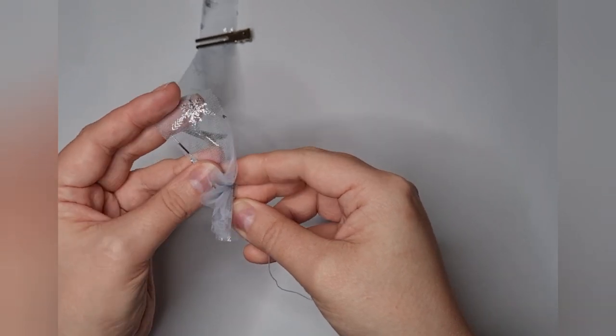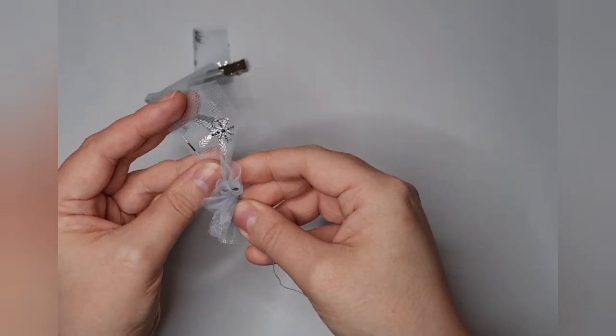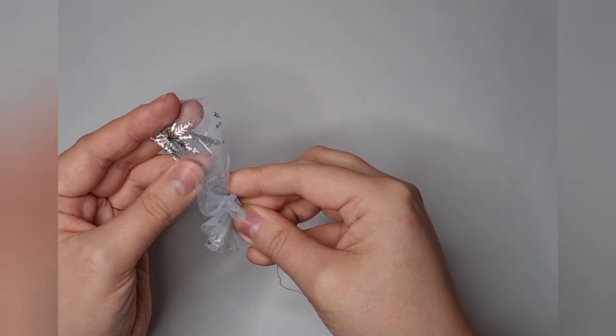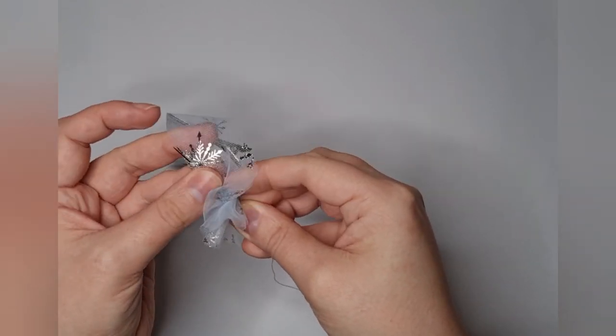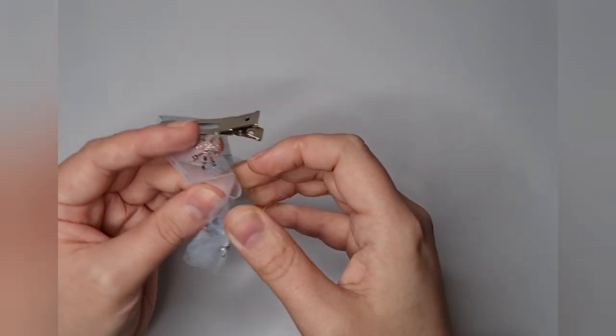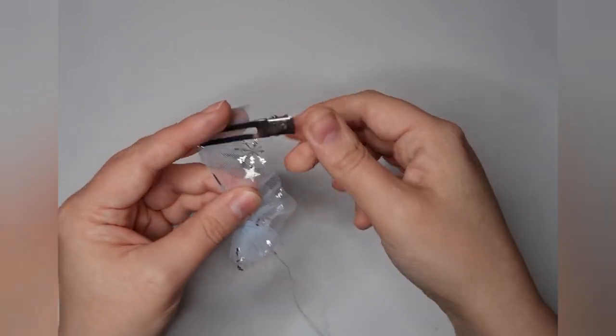And again, if you want a fluffier version, do half centimeter stitches instead of centimeter. And again, that gives it a more full, tighter look. So you can play around with the actual ruffle build as well. Like I said, I'll try and make mine as even as I can.